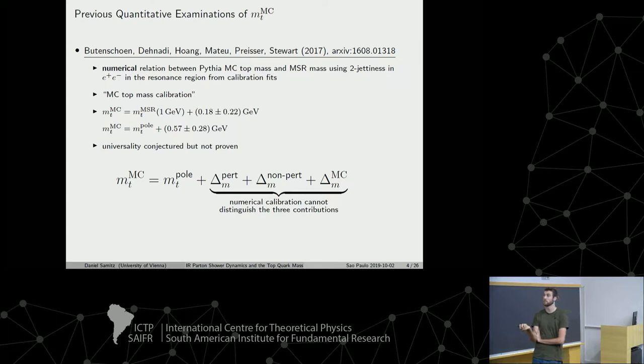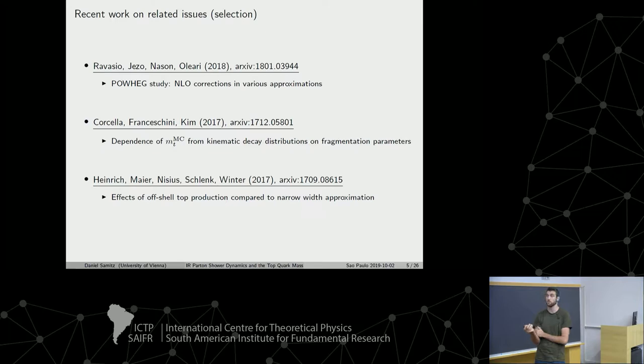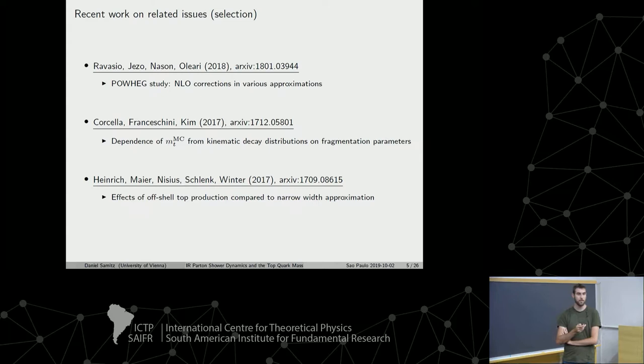There are also many recent studies on top quark mass measurements at hadron colliders, looking at different ways to include next-to-leading order information, finite width effects compared to the narrow width approximation, and so on. Our project specifically addresses the effect of the parton shower cutoff on the top quark mass.